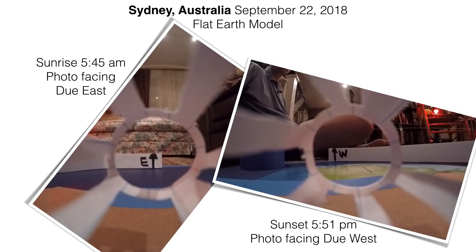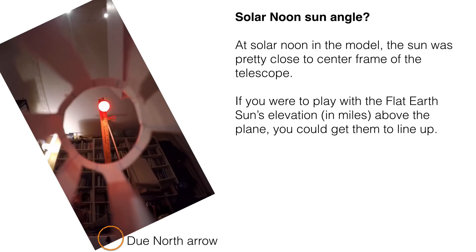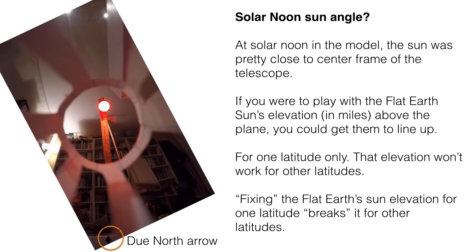Here are two photos: one taken at the moment of sunrise and the other at the moment of sunset for Sydney, Australia on the equinox for the flat earth model. Part of the challenge was solar noon — the sun was pretty close to center frame, but the argument is you could just play with the sun's elevation. I picked 3,000 miles, but what if you picked 3,200 or 2,800? You could get it to line up if you just fudge the numbers — but that would only work for your latitude.